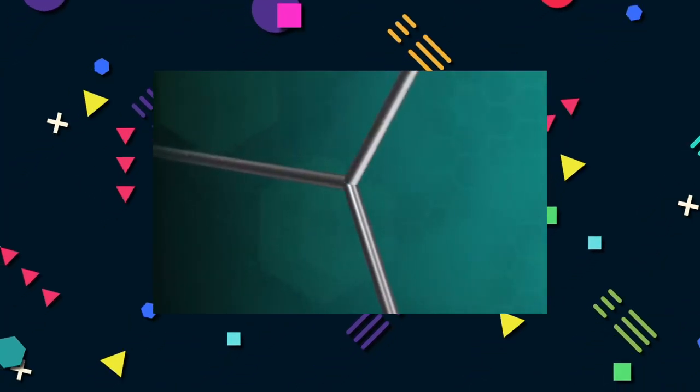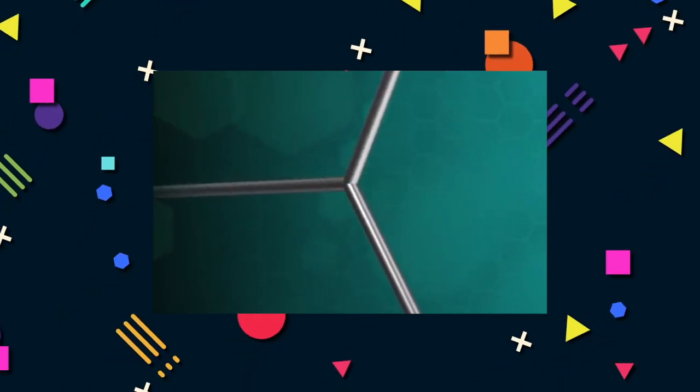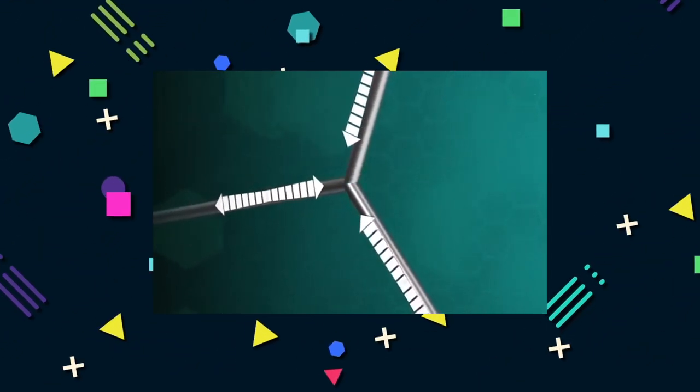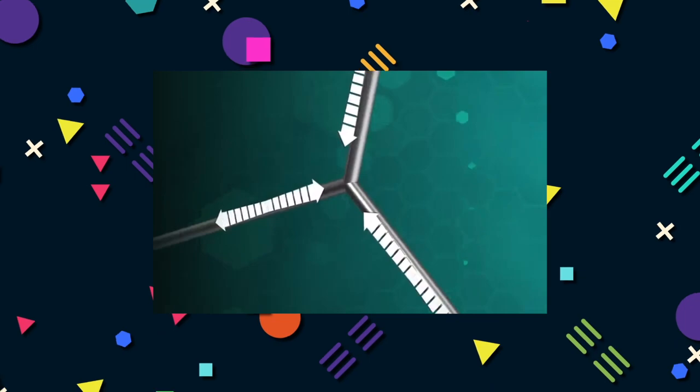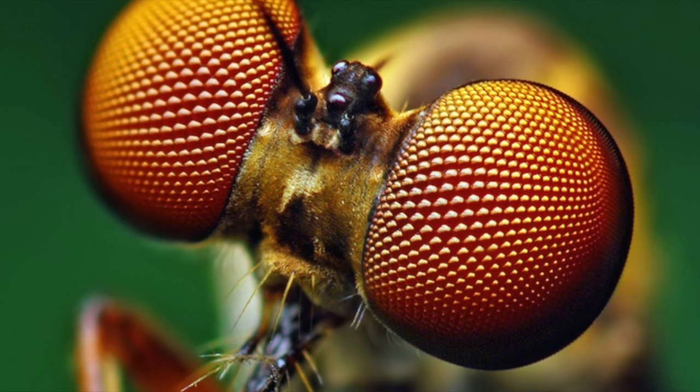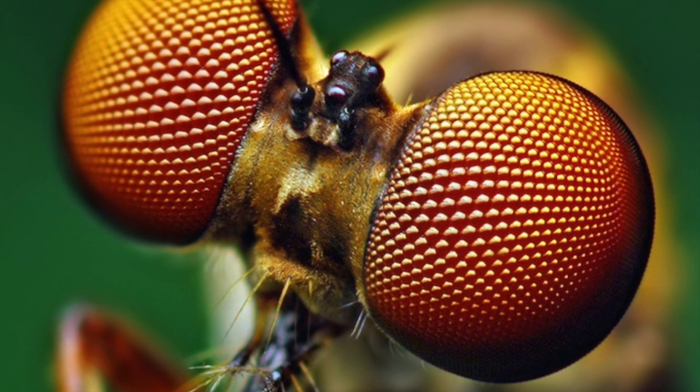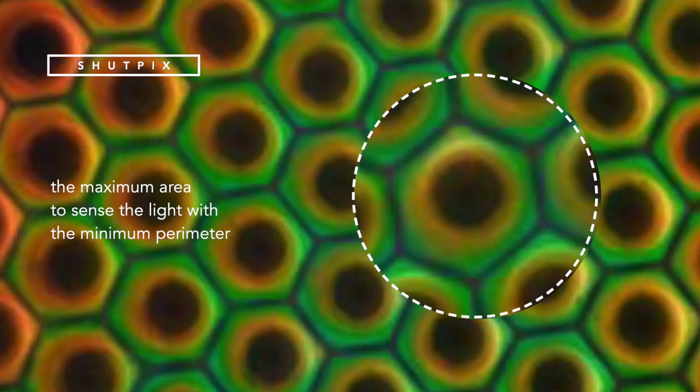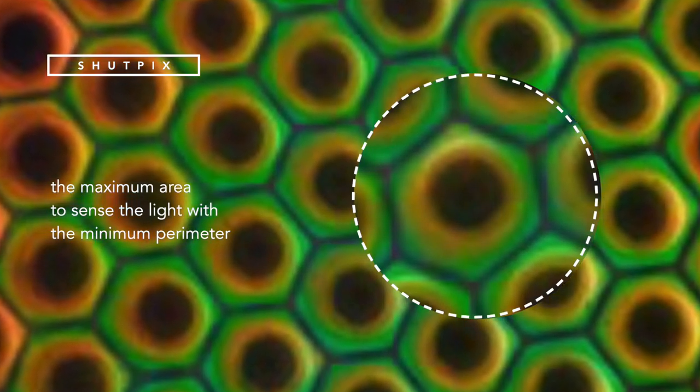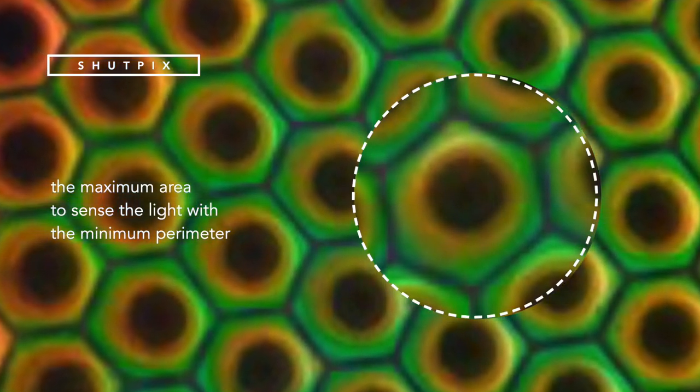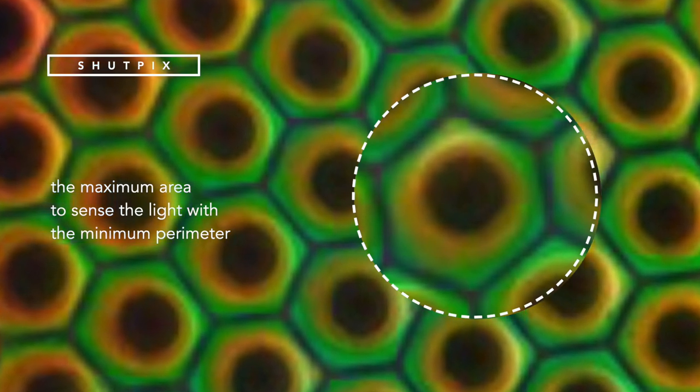Another reason for the hexagonal craving is that when the angle between the links is 120 degrees, it gives the most mechanically stable structure. And what about the compound eyes of insects? Apply the same logic. It allows the maximum area to sense the light with the minimum perimeter and thus less material requirements.